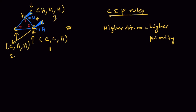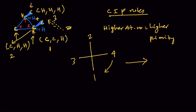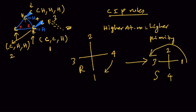Viewing from the appropriate direction, priority 4 is on our right, priority 3 on our left, priority 2 up, and priority 1 down. To determine configuration we need the lowest priority group pointing away. Performing one swap to bring priority 4 to the bottom gives priority 1 on the right — the sequence 1→2→3 is then counterclockwise (S), but since we did one swap, the original configuration is R. Therefore the absolute configuration for the first chiral carbon is R.